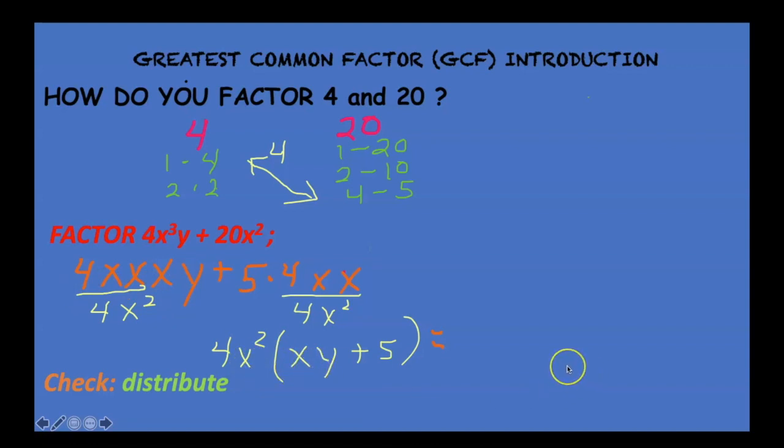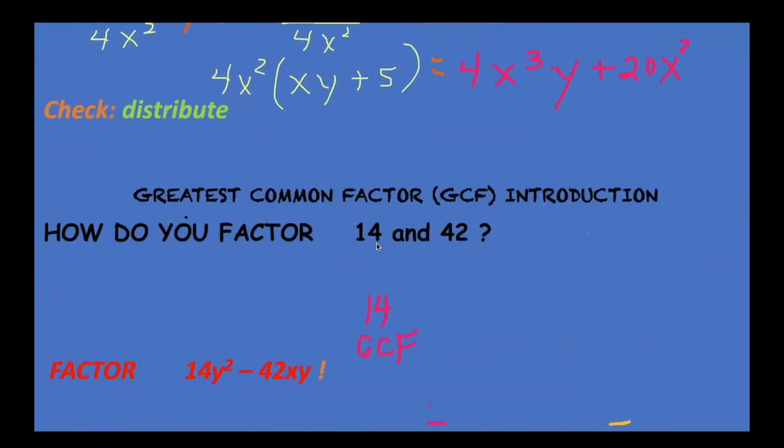Now let's check it. You can always check these. You should know whether you're right or wrong. When you distribute, you take 4x squared times xy, 4x squared times 5. You may have seen this where they draw a little arc over. So this checks. Look, this is the original problem that I ended up with. You should never miss a problem of this type because you can always check it.